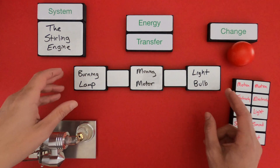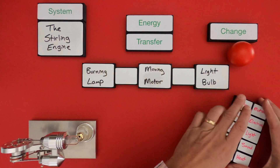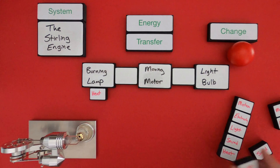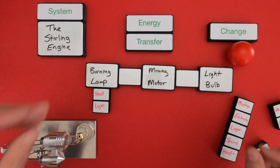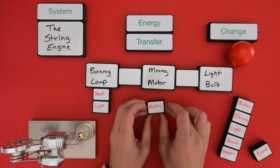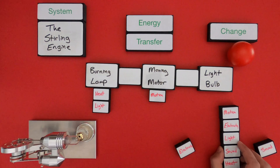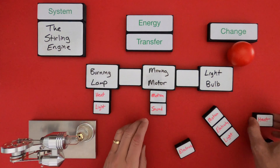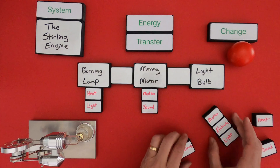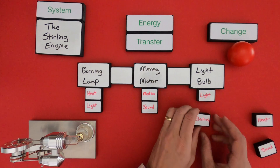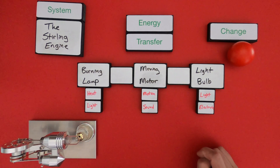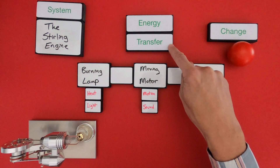The burning lamp — what type of energy are we going to see there? The big ones I saw would be heat — I could feel that — and then light. As it starts moving, if we're looking at the energy in the moving motor, I'm obviously going to have energy of motion, but another thing I picked up would be energy of sound. What I'm really trying to show is not only what's the object, but what's the energy within that object. The light bulb — if we figure out what the energy is there — well, there's light and there's probably also electricity.